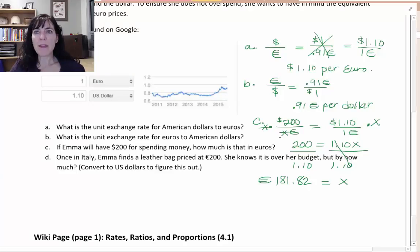One more question, and that is part D. When she's in Italy, Emma finds a leather bag priced at two hundred euros. So we have two hundred euros. And she knows she's over her budget, but she wants to know by how much. So she has two hundred euros to x dollars.